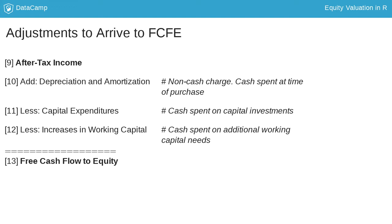Another adjustment is the additional capital investments the firm needs to fund the growth in its projections. If the firm had to buy a new machine next year, for example, we have to spend cash in year one to buy that machine, which would be a drain on our year one cash and should be subtracted to get to our free cash flow. The last common adjustment is the increase in non-cash working capital. For valuation purposes, working capital equals non-cash current assets like accounts receivable and inventory, less non-interest bearing current liabilities like accounts payable.